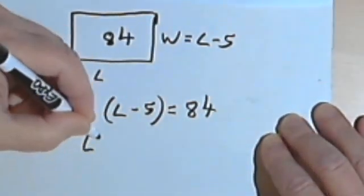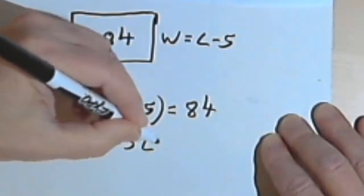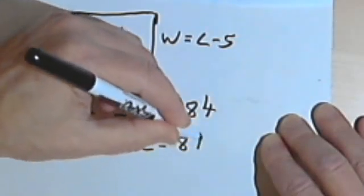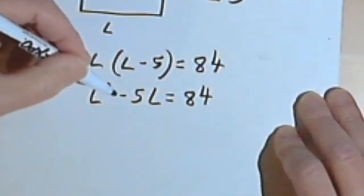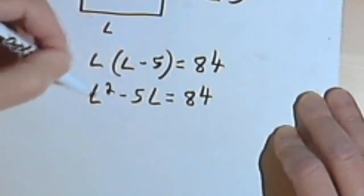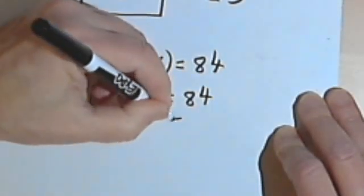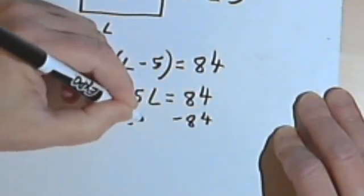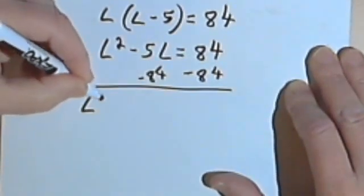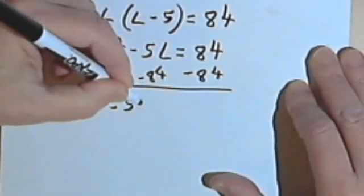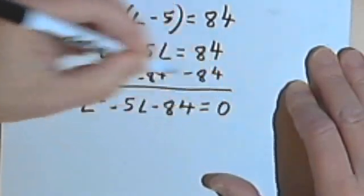I'll distribute this L. So I've got L squared minus 5L equals 84. I'll make the whole thing into a quadratic equation with all the terms on the left. So I want to subtract 84 from both sides.